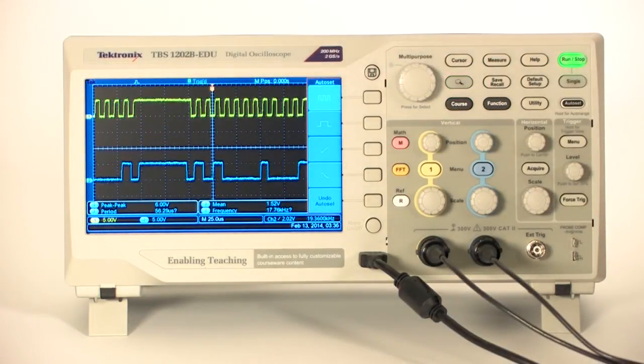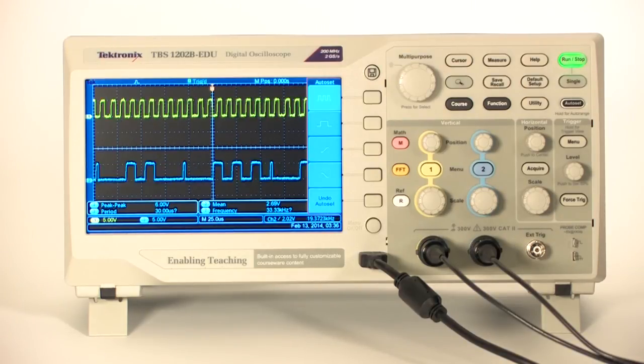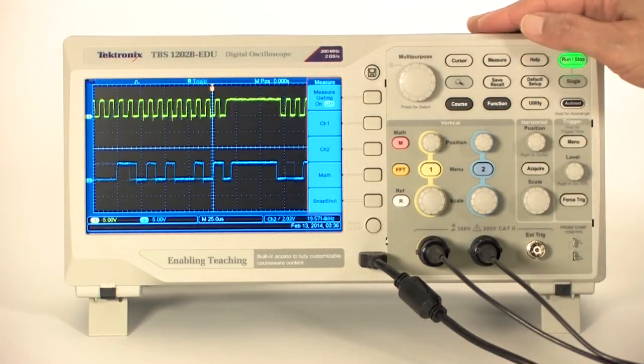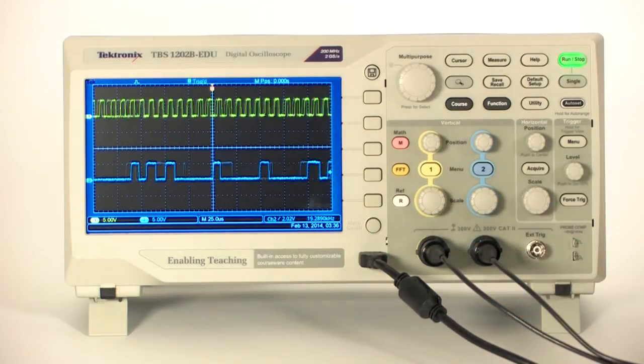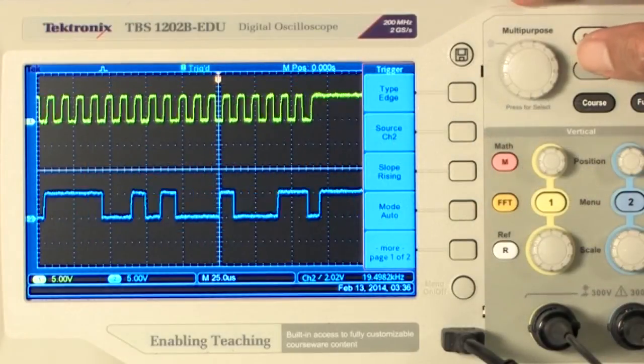Often, digital data comes in packets. Simple edge triggering won't allow you to pick out the packets. You can use pulse width triggering to capture them. Let's take a look at some I2C information. We'll set the scope up to look for idle time in between clock bursts. I'll press Auto Set to get started.